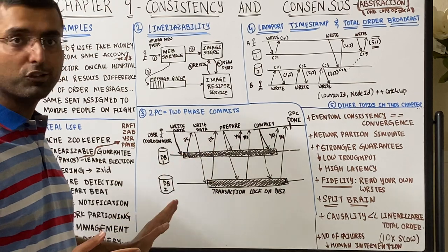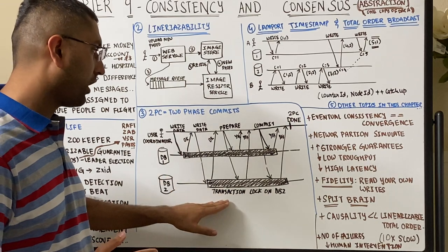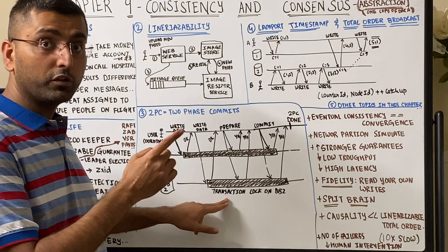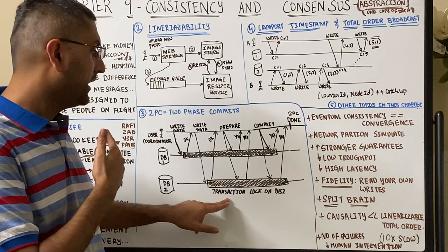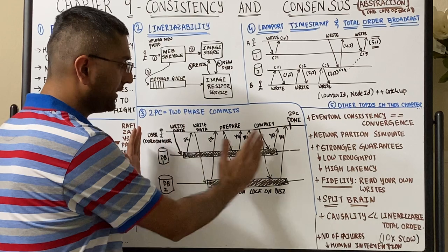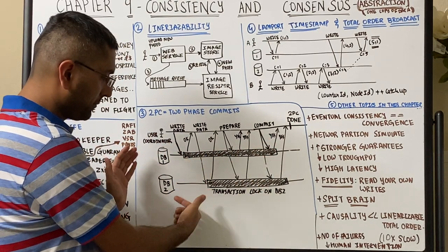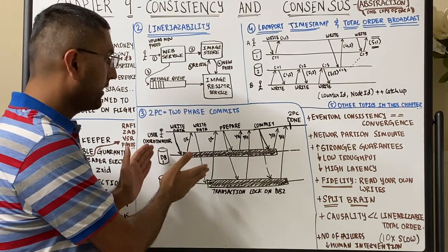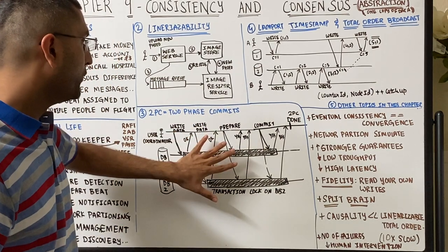Two-phase commits either go through or they don't, and at various phases there could be problems. Transaction locks are used — and transaction as an abstraction was covered in previous videos. These distributed machines, potentially across multiple data centers, can still commit and deliver consistent data across data centers through two-phase commits.